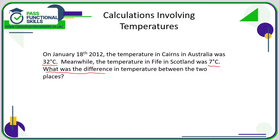So it's either going to be 32 take away 7, or 7 take away 32. Obviously it makes more sense to subtract the smaller number from the bigger number, so 32 degrees take away 7 degrees is 25 degrees. There was a difference of 25 degrees between these two cities.